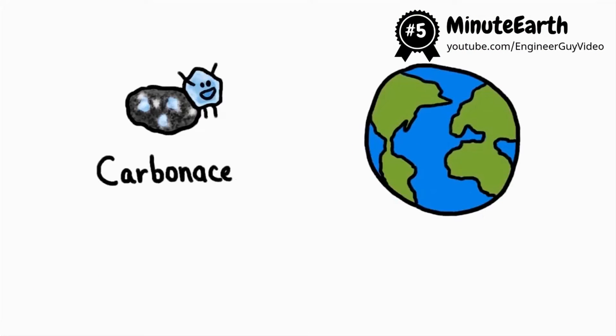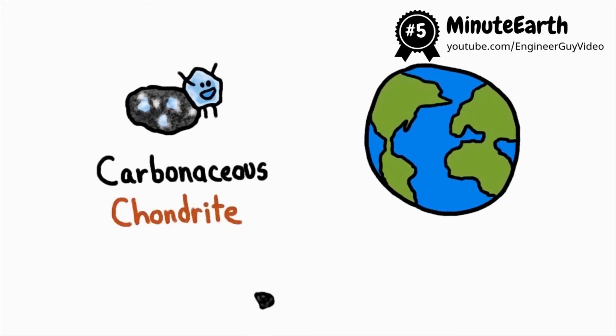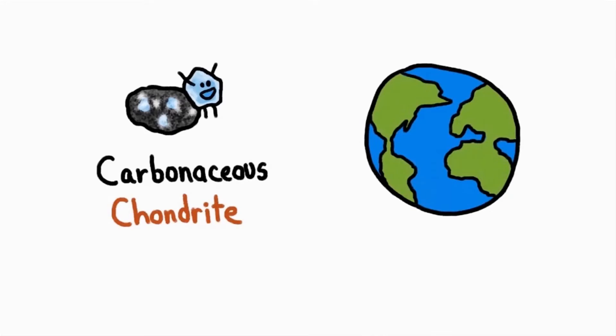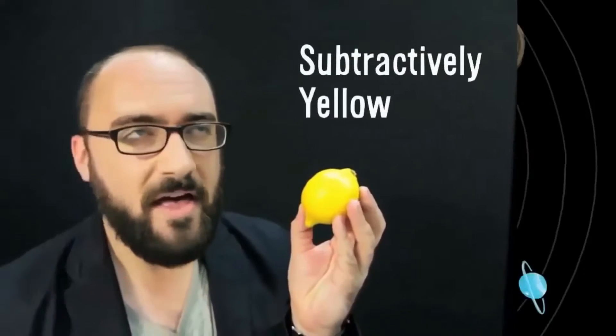It turns out that the most likely source for Earth's water is a type of meteorite called a carbonaceous chondrite. Chondrite is just the name given to the class of stony meteoroids that most commonly strike the Earth, but only the carbonaceous chondrites contain water as well as lots of carbon.